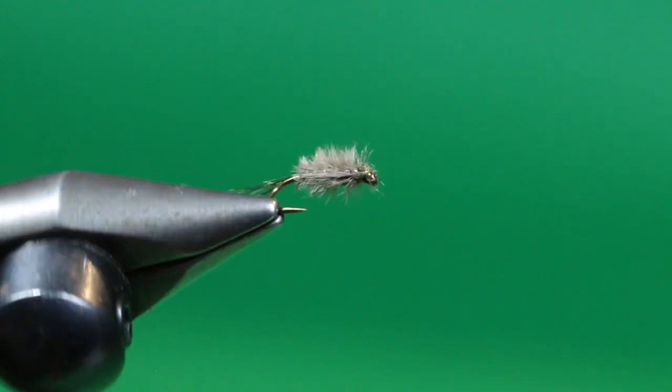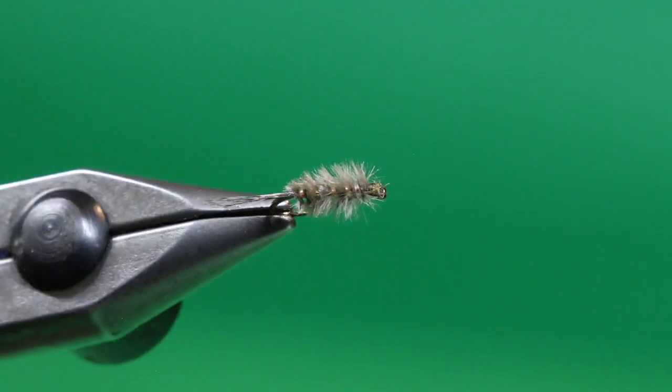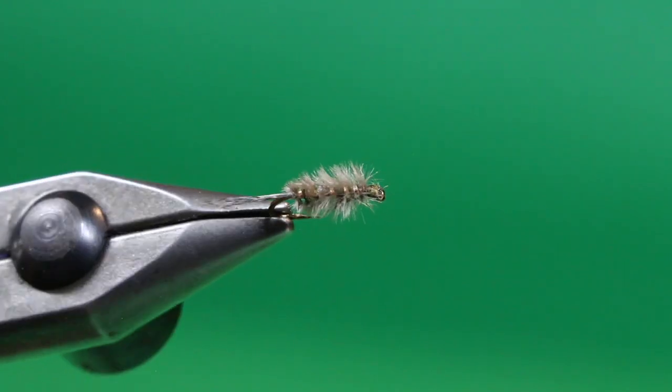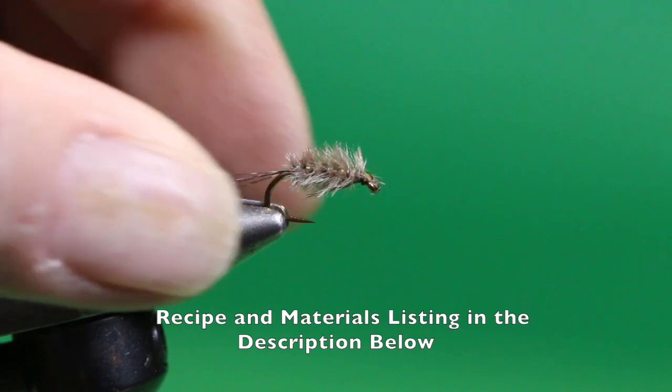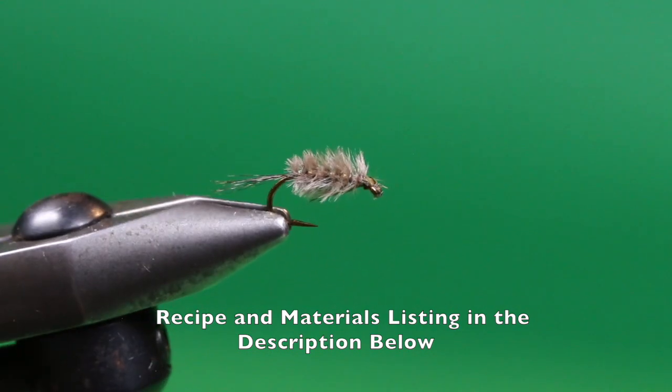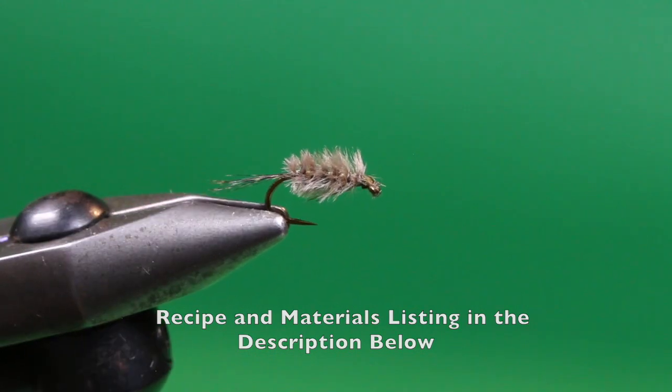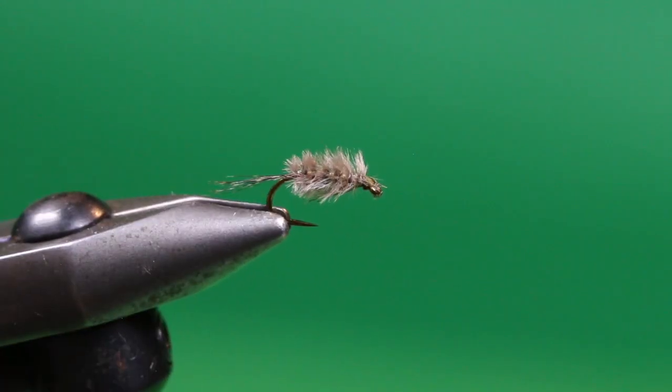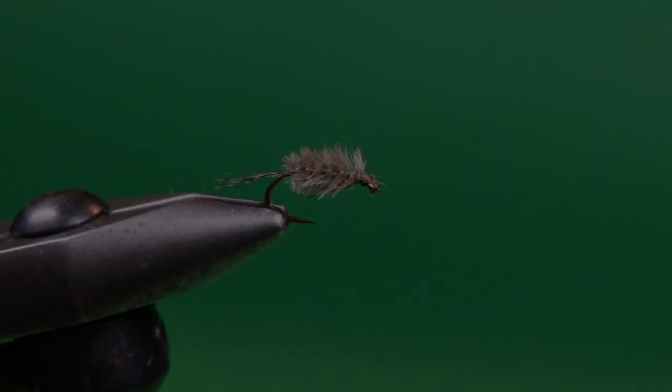You can fish this cast and retrieve using a floating line, a midge tip, slow hand twist retrieve with pauses. As simple as it is, it also hangs very well under a strike indicator. One of my favorite suggestive Calibatus nymph patterns. Fish love this thing.